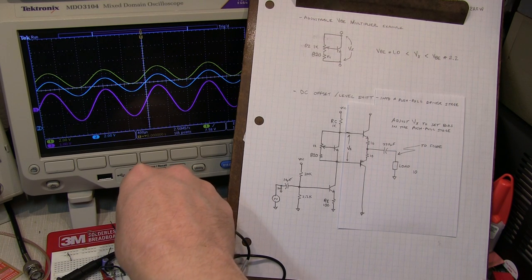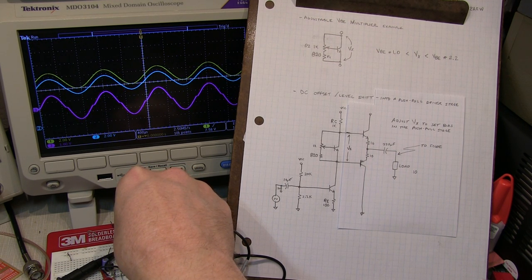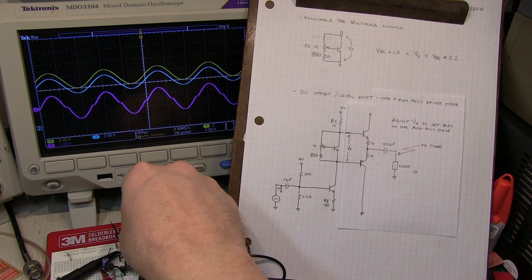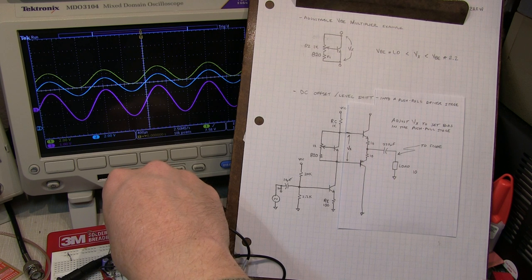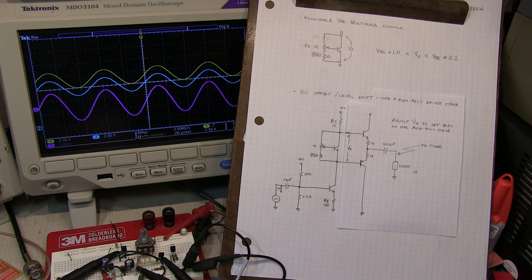Well, I hope you enjoyed this video. Learned a little bit about what a VBE multiplier or amplified or adjustable diode circuit does, how it works, and at least one or two of the applications of where it might be used. Thanks again for watching. Comments are always welcome. If you haven't subscribed yet, please do. Tell your friends. And thanks again for watching.